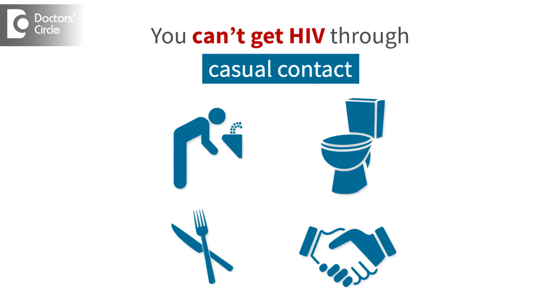The third way of transfer can be use of needles and syringes — common use of needles and syringes, mostly seen in drug addicts where they commonly share needles. The needle would have pricked an HIV positive person and then pricks into the next person, so the HIV virus goes directly into the blood stream.